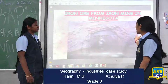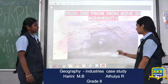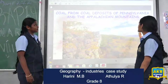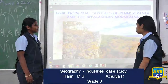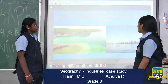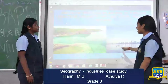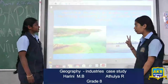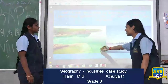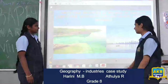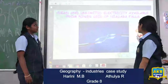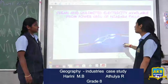Iron ore is brought from the iron mines in Minnesota. Coal is brought from the coal deposits of Pennsylvania and the Appalachian Mountains. Limestone is provided by mining various limestone deposits, especially from two Great Lakes — Lake Huron and Lake Ontario. Here we can see the limestone very clearly.